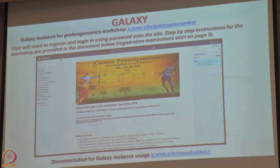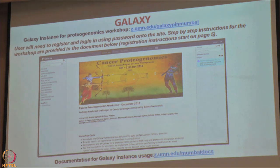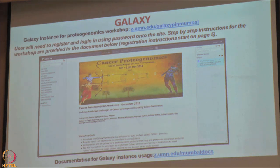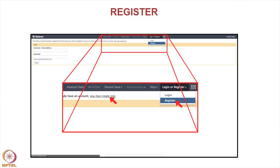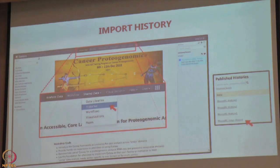There is a Galaxy instance that we have set up, and I will come back to what Galaxy is. I would not encourage you to go on it right now because I am going to demonstrate on that particular instance, but I will definitely encourage you to go to that instance at z.umn.edu/galaxyp in Mumbai. It basically is a Galaxy instance on which you can use step-by-step directions which have been provided in the documentation. You should be able to use the instance just like I am going to use right now. All you need to do is go on to that website and register — all you need is a login and a password — and once you register, you would go to a place called histories.